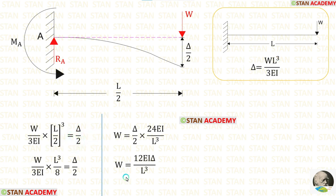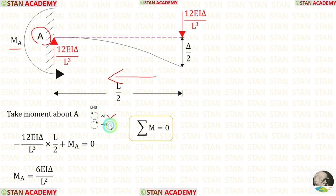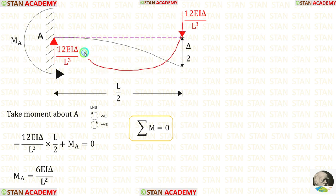After the simplification, we are getting W = 12EI·delta/L³. To find out MA, I am going to take moment about A. In this case, I am moving towards the left-hand side. Clockwise will be negative and anticlockwise will be positive. The point load is acting towards point A in the clockwise direction. So, it will be negative and the distance is L/2.